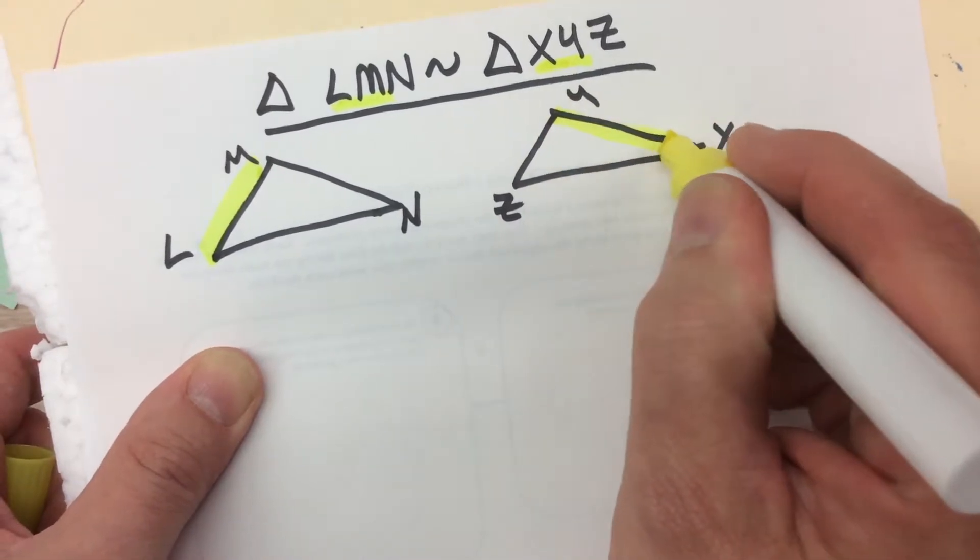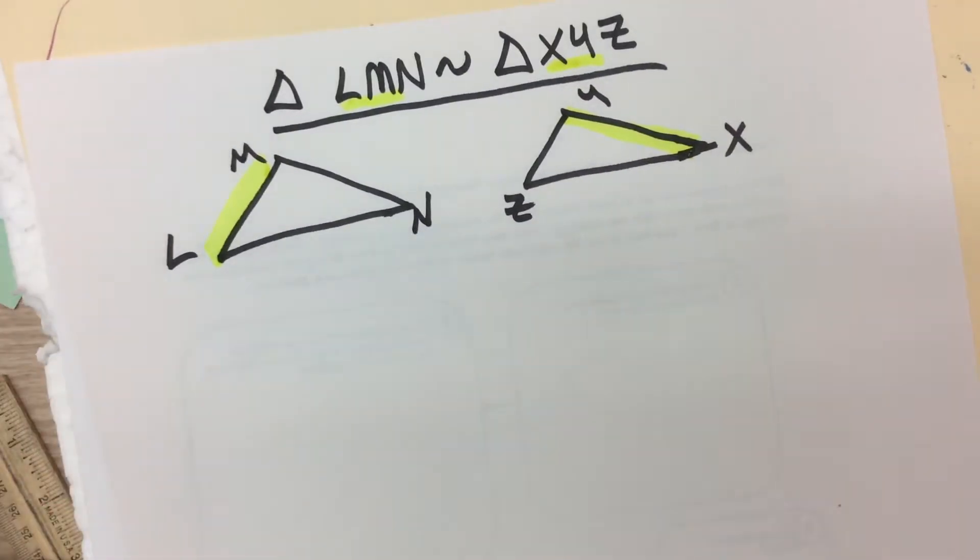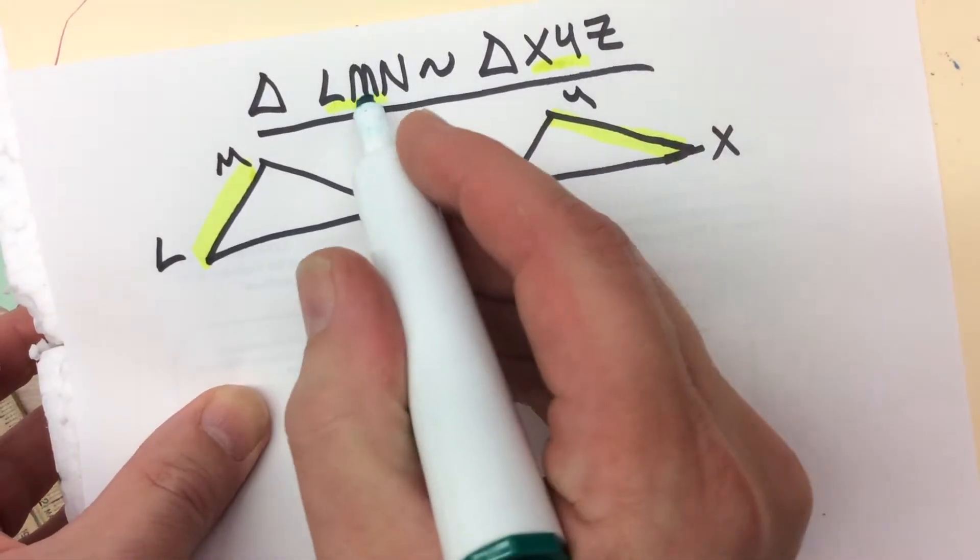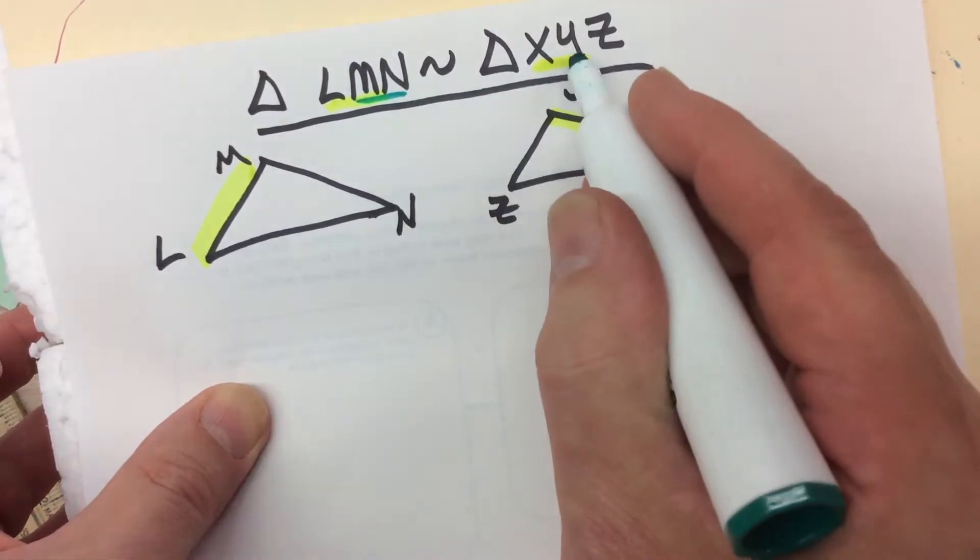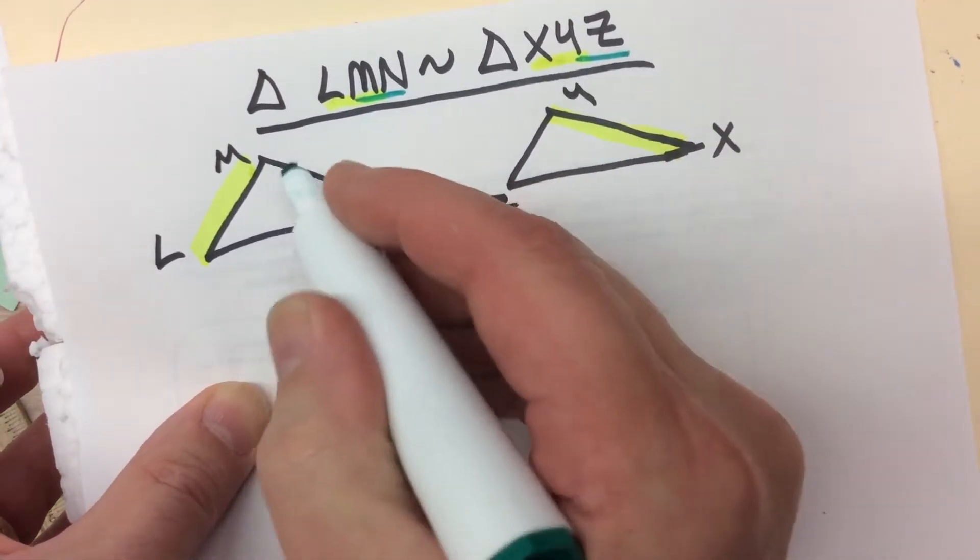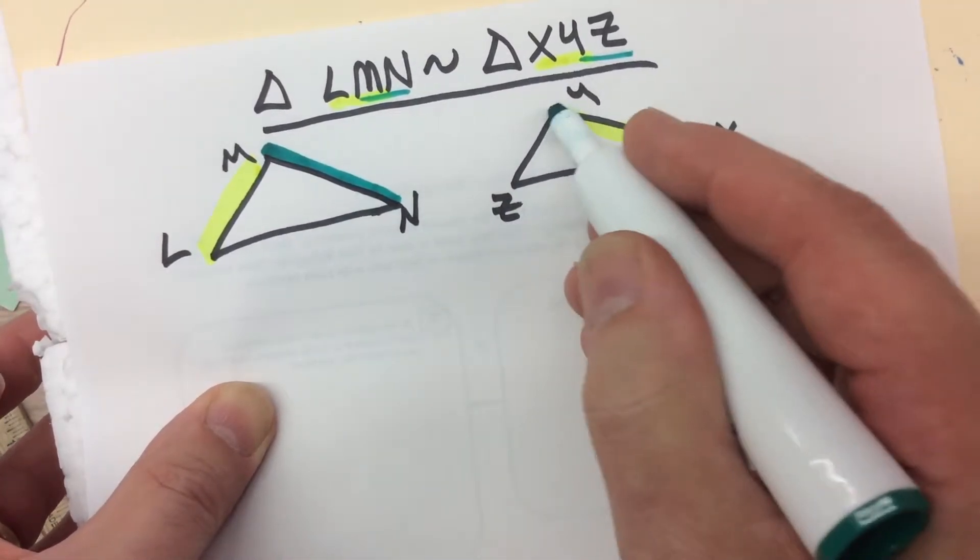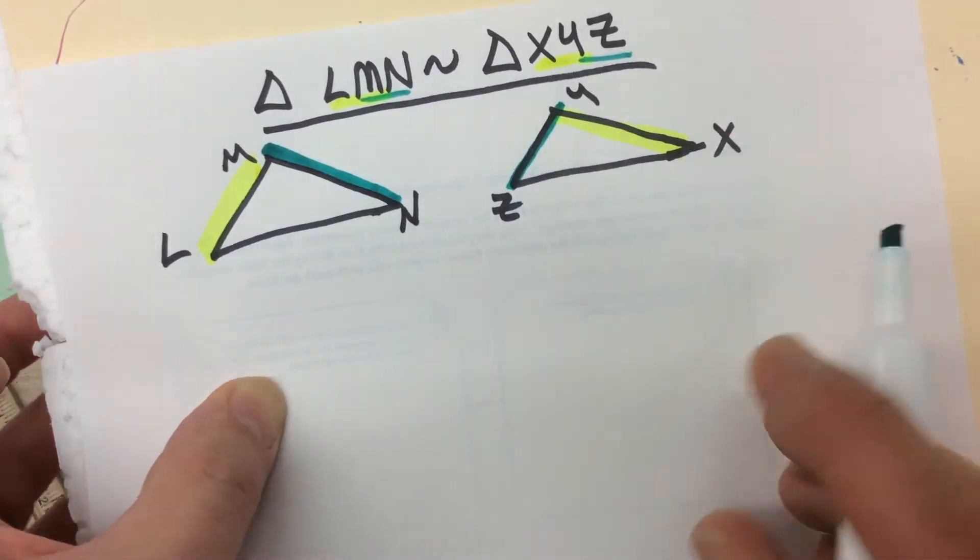LM and XY. And whatever the ratio is between those two sides, it's going to be the same as the ratio between every other side pair that corresponds. M, N and Y, Z correspond to each other because that's the position they're in in the similarity statement.